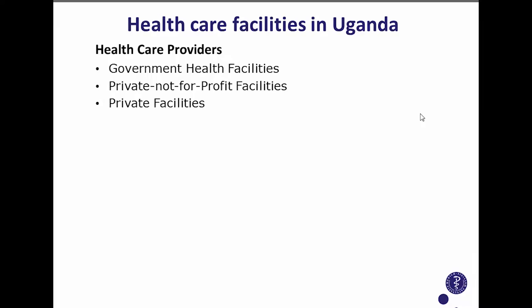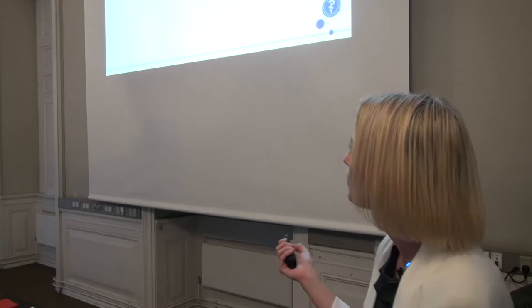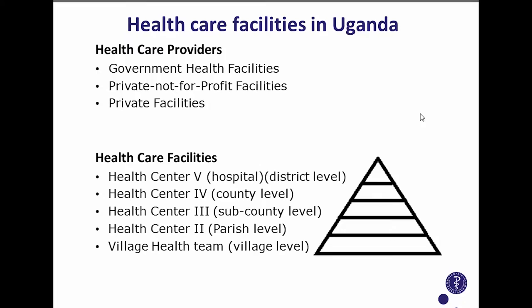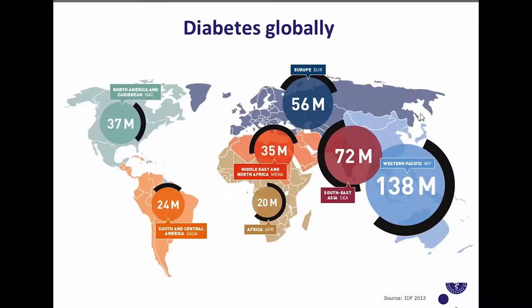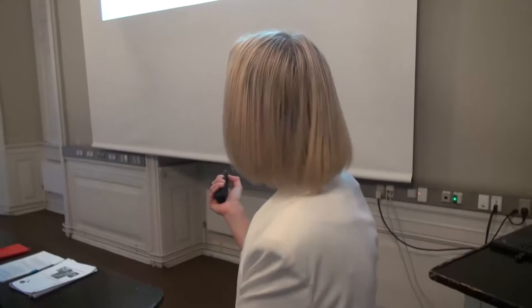There are private not-for-profit facilities which charge a little fee and are often church-based, and then we have private facilities which charge quite a high fee. For a local Ugandan, the healthcare facilities are tied into a five-level structure, with the health center five or hospital at the highest level and village health team members at the lowest level.